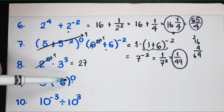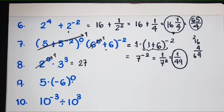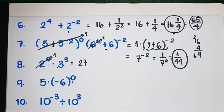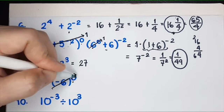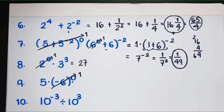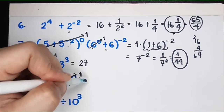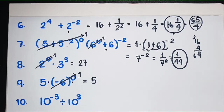You should be happy when you see a 0 exponent, because it's easy to simplify — it equals 1. The only exception is 0 raised to 0, which is indeterminate. But other than that, any number raised to 0 equals 1. So for this problem, that expression equals 1, and you only have 5 times 1, giving the answer 5.